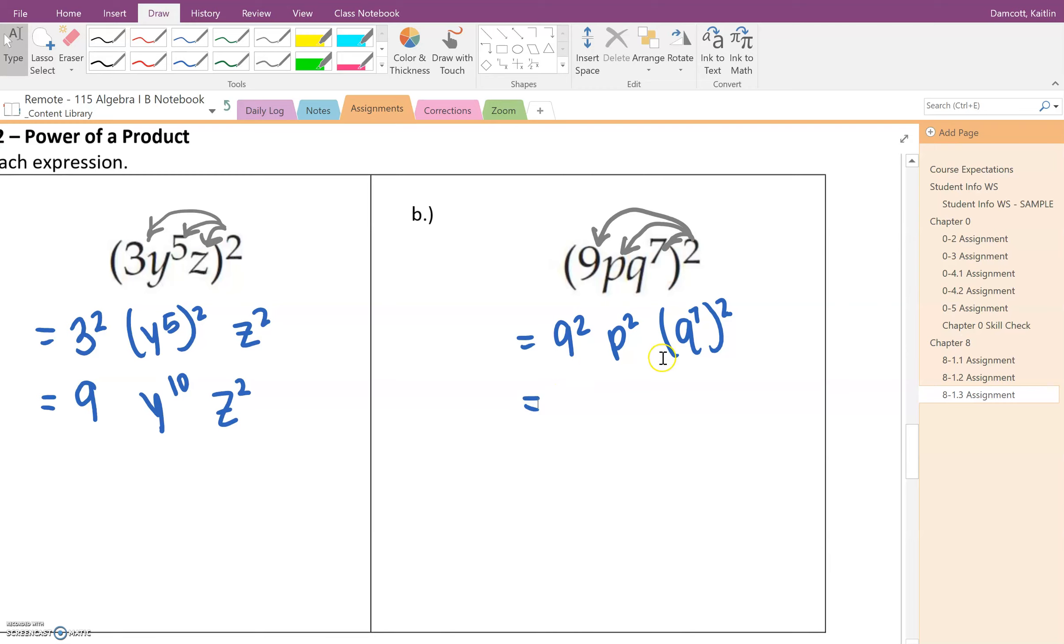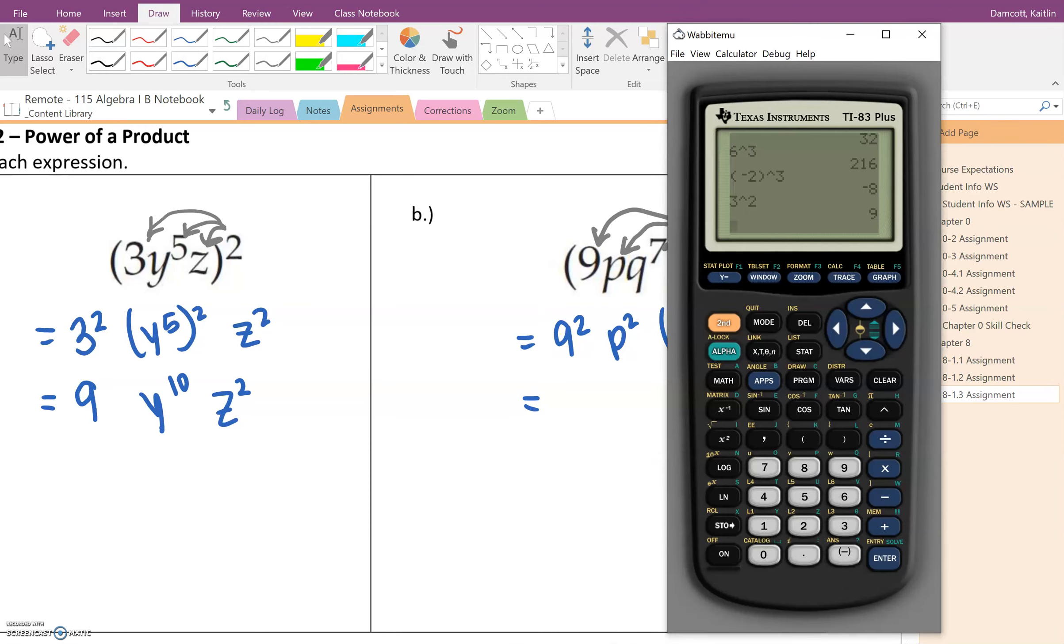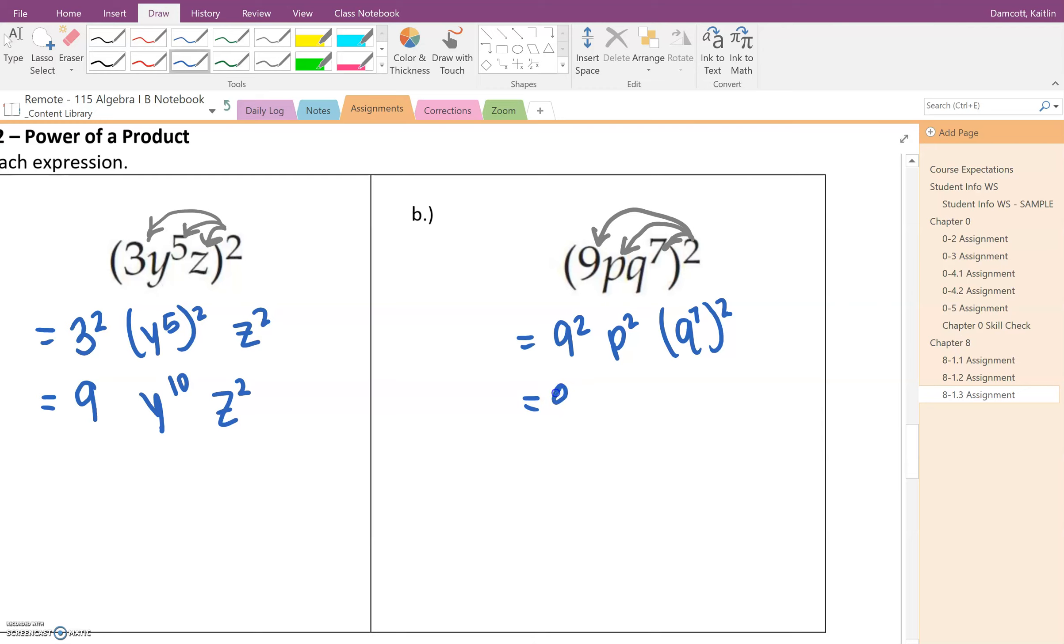Now we just need to do some simplifying. And I really don't like the variable q because it looks like my 9, so we just have to be careful with this. So I've got 9 squared, or you could think of it as 9 times 9. Regardless, it comes out to be 81. We've got the p squared, that looks good.